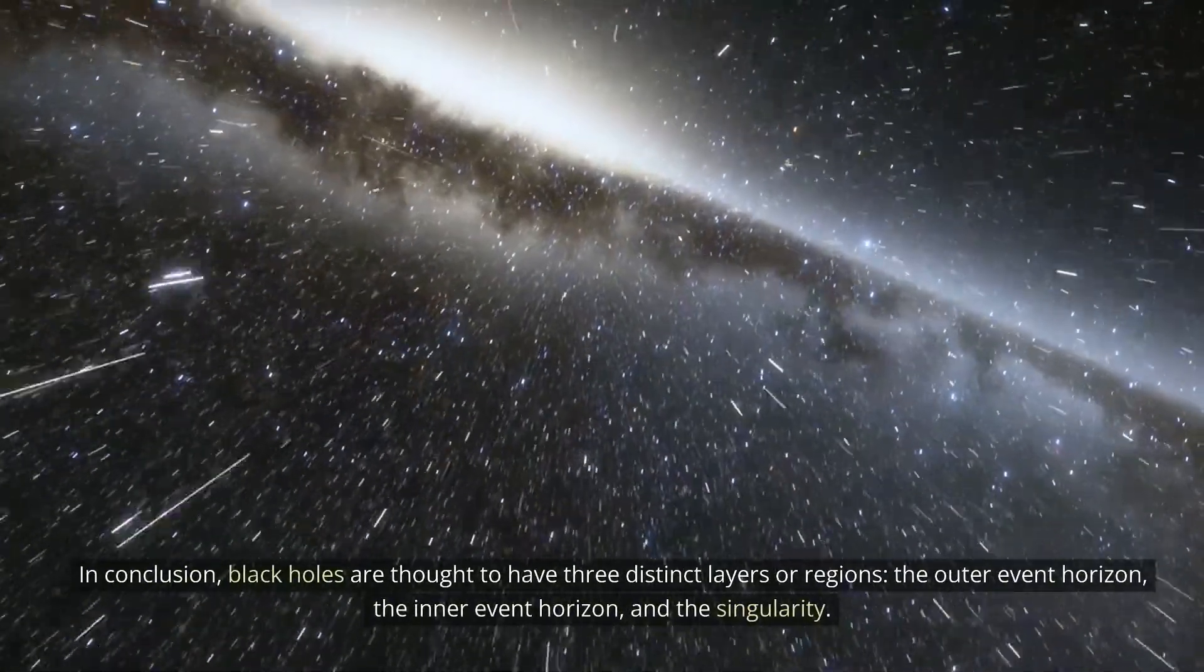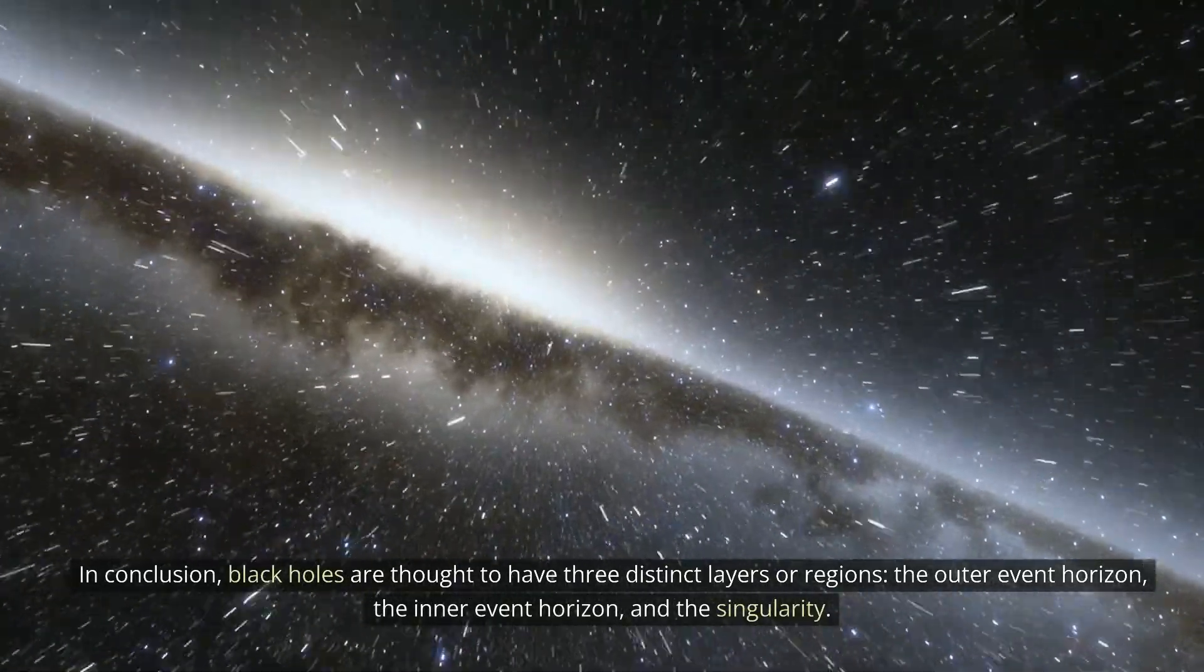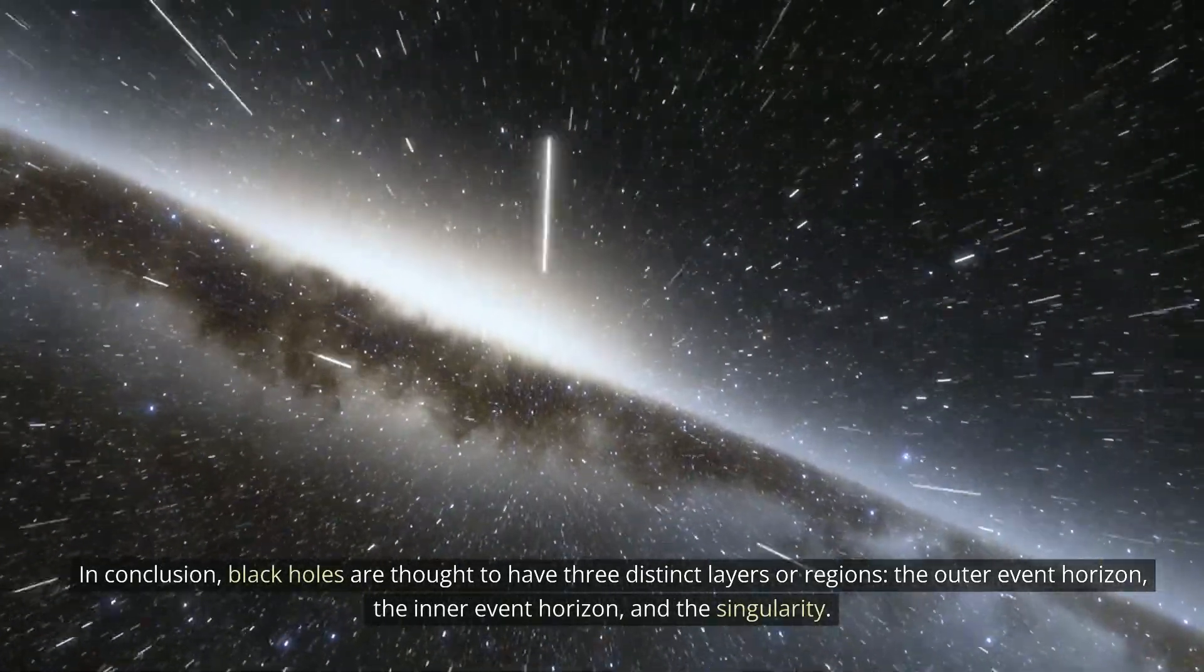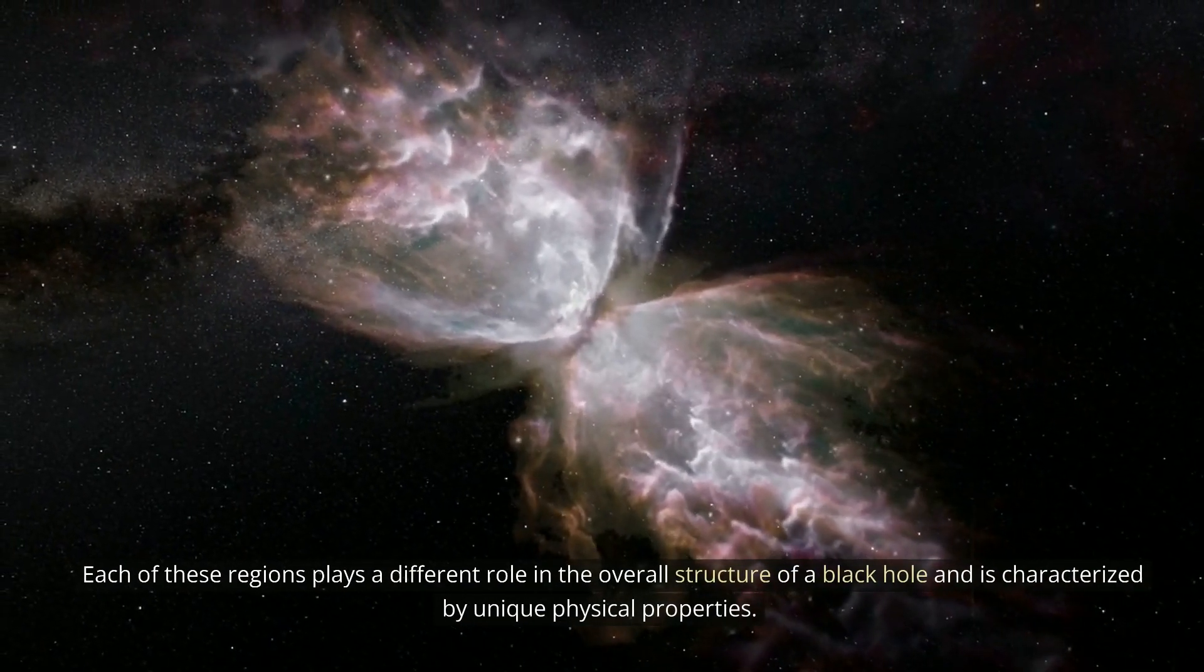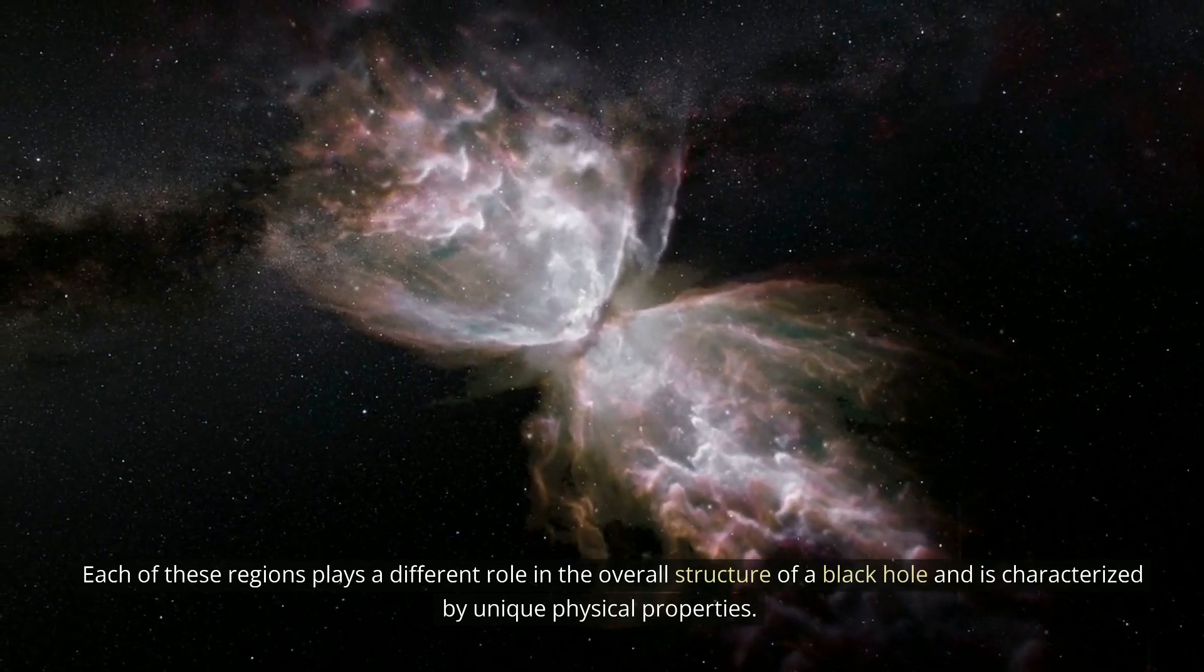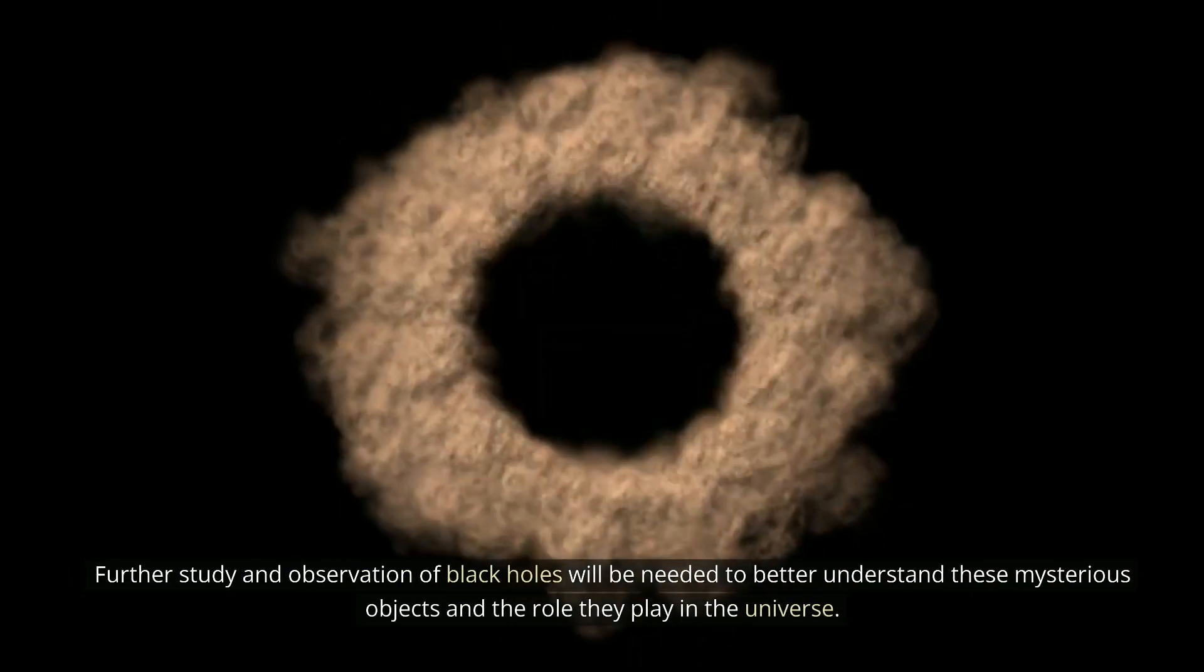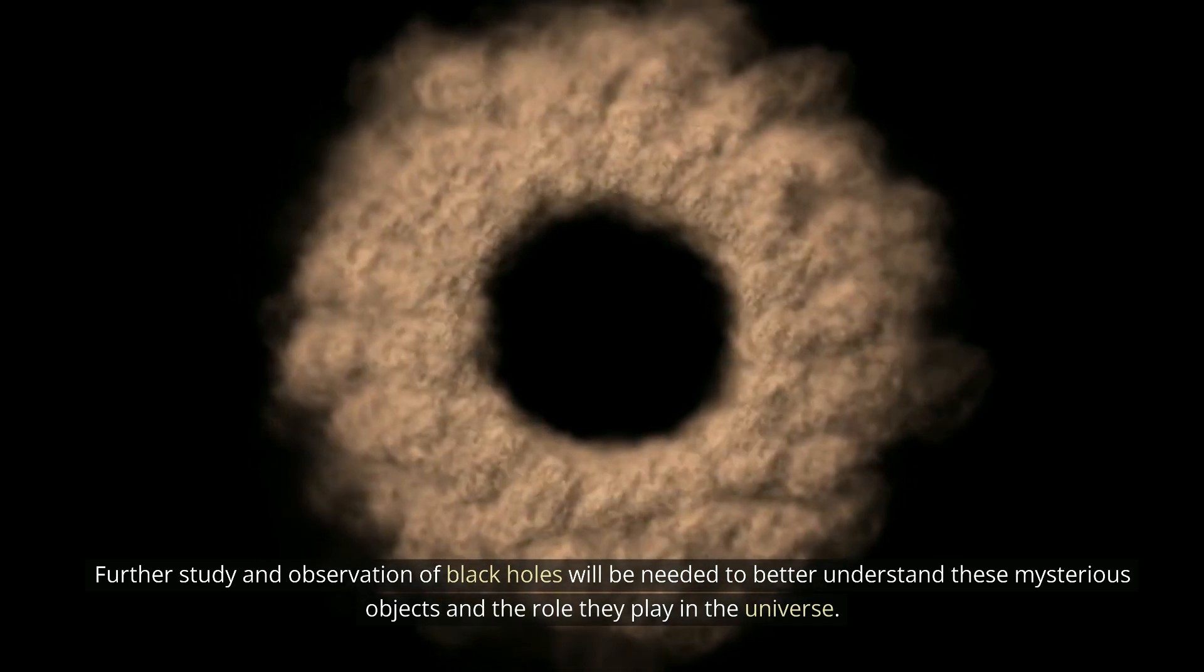In conclusion, black holes are thought to have three distinct layers or regions: the outer event horizon, the inner event horizon, and the singularity. Each of these regions plays a different role in the overall structure of a black hole and is characterized by unique physical properties. Further study and observation of black holes will be needed to better understand these mysterious objects and the role they play in the universe.